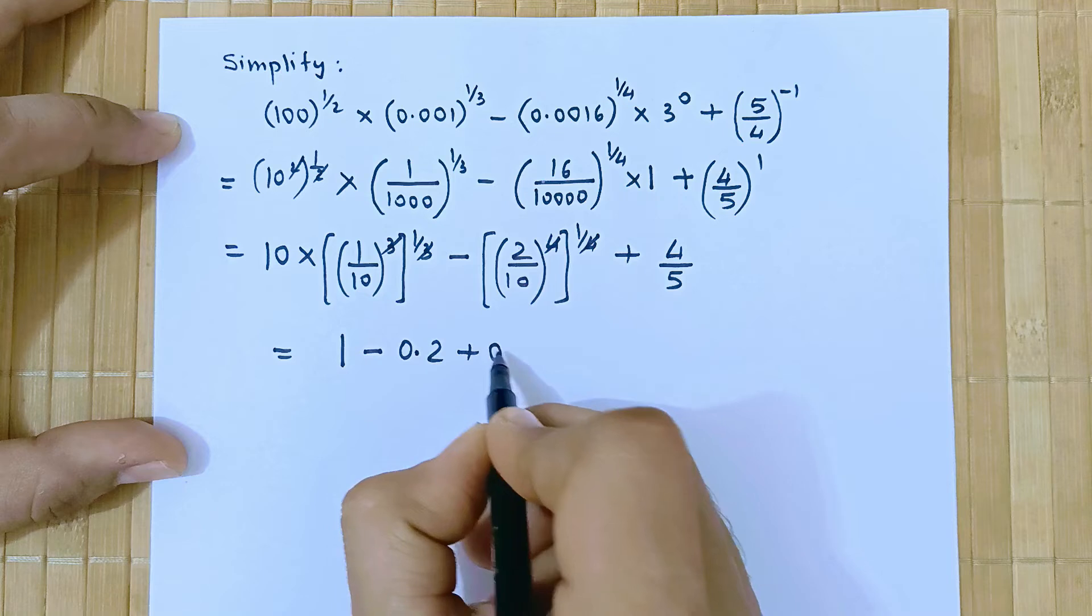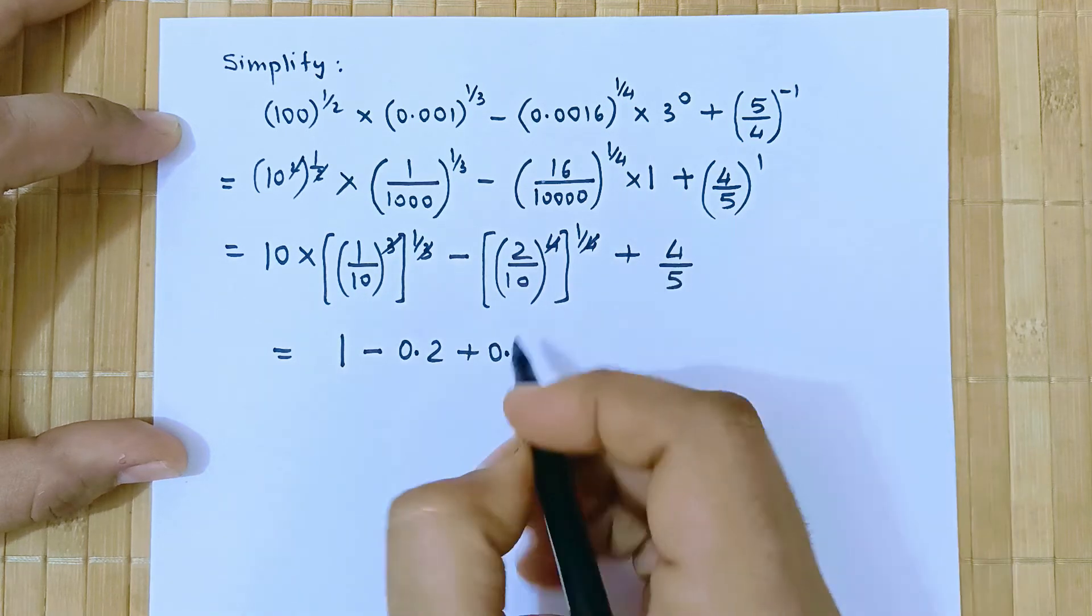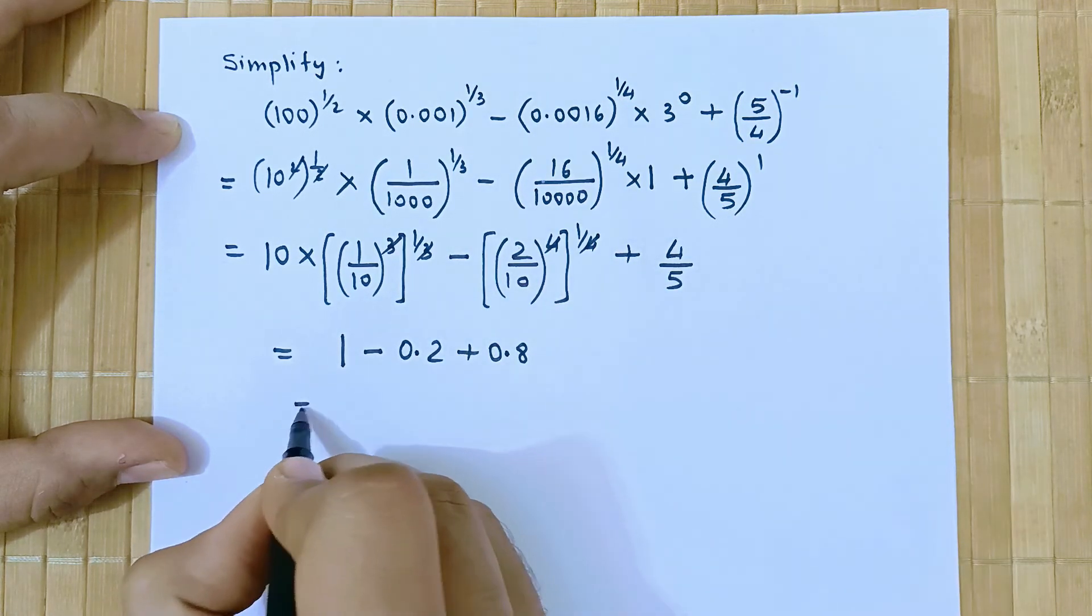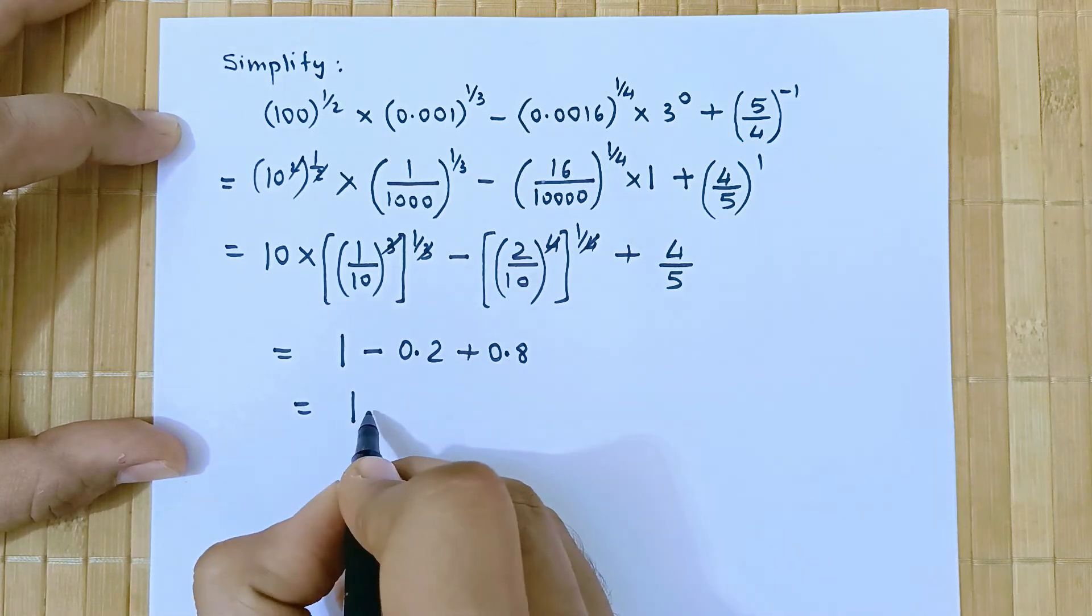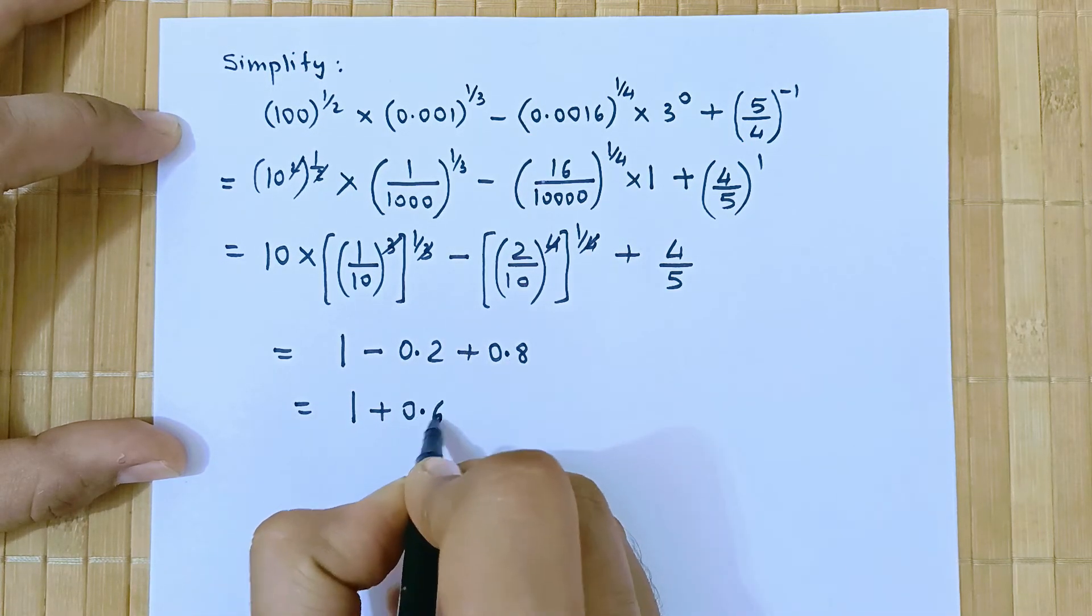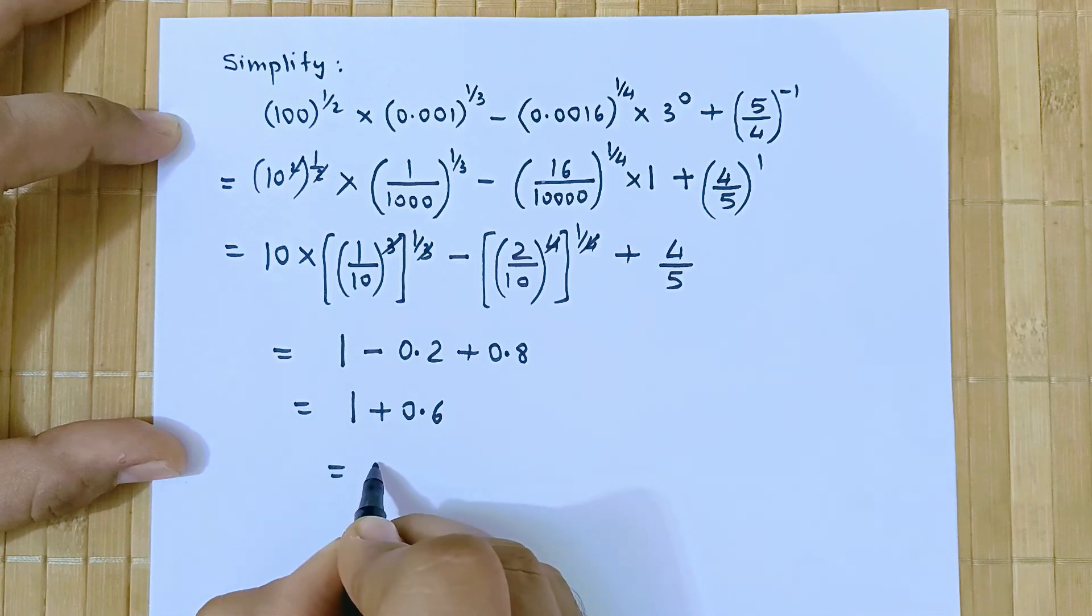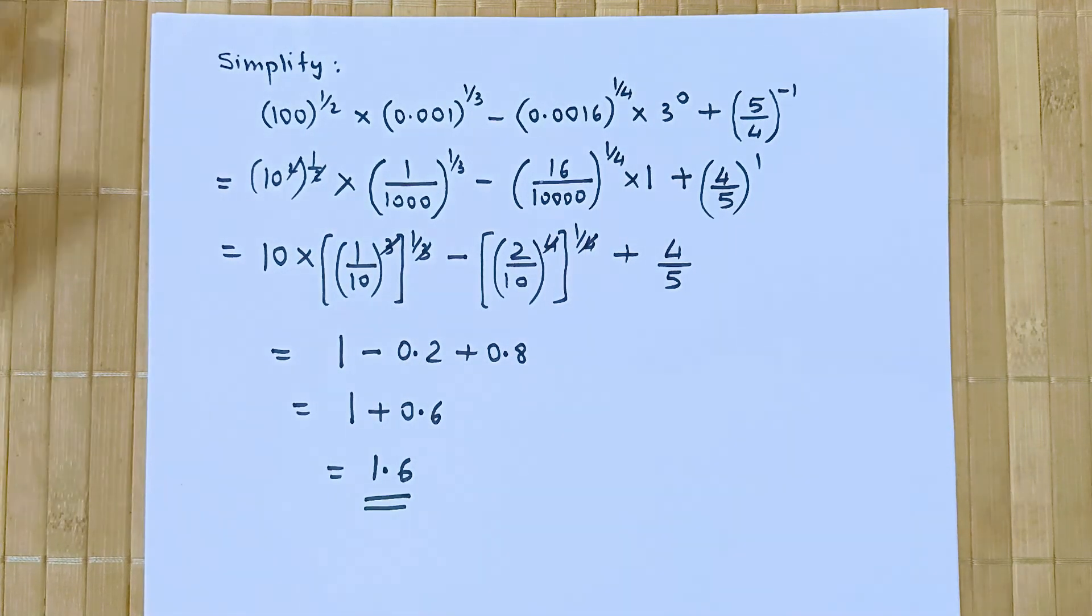4 by 5 is 0.8. So finally we have 1 and 0.8 minus 0.2 is 0.6. So the final answer is 1.6. So this is the required value.